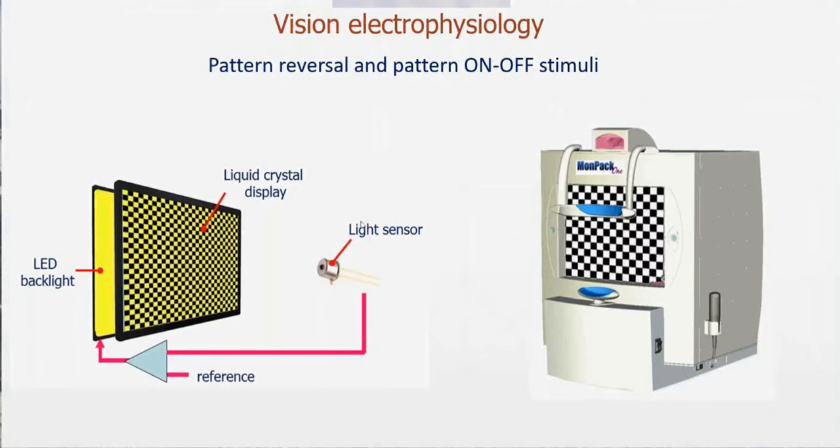So this guarantees that we have constant luminance and no transient flash for pattern reversal and also for pattern on-off stimulation.